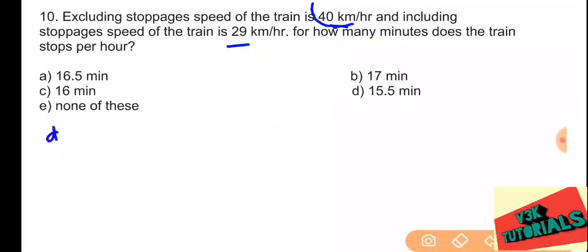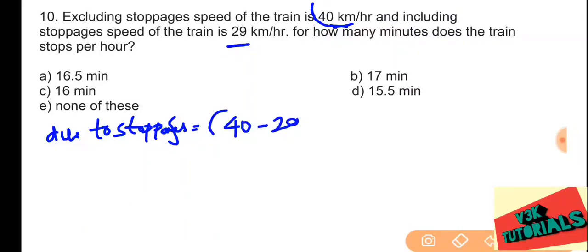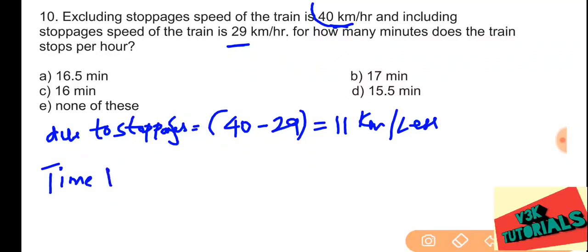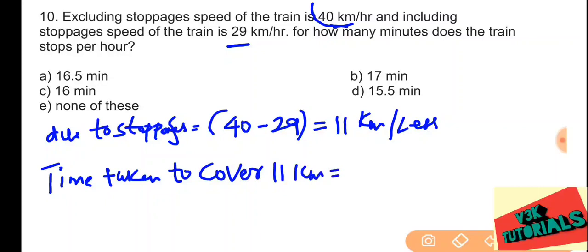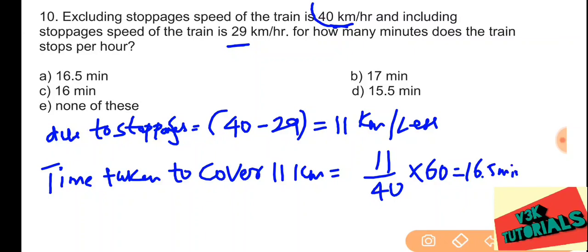We find the time taken to cover 11 kilometers at 40 km/h: time equals 11 divided by 40 hours, multiplied by 60 to convert to minutes, giving 16.5 minutes. So the train stops for 16.5 minutes per hour, and that option is the correct answer.